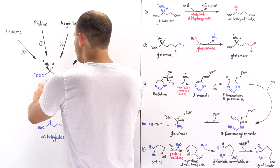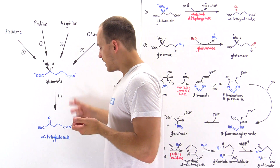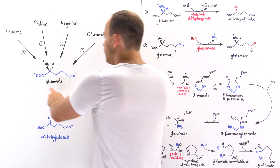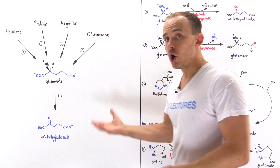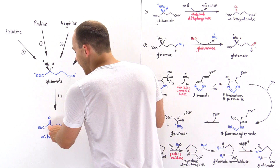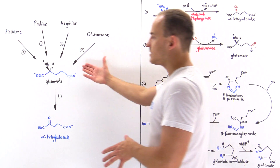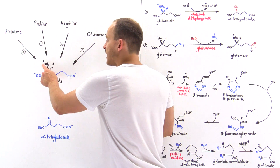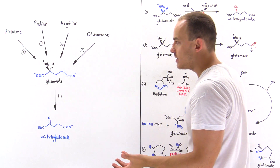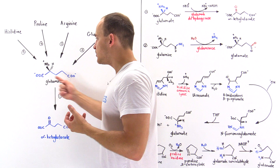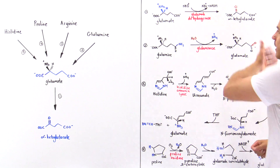Let's take a look at how glutamate can be transformed into alpha-ketoglutarate. What's the difference between glutamate and alpha-ketoglutarate? On glutamate we have this alpha amino group, but on alpha-ketoglutarate we don't. Instead, the carbon is oxidized and we have a carbon-oxygen double bond. So ultimately in this step, we basically want to remove this alpha amino group along with the H ion — we want to remove an ammonium. We want to undergo a deamination step in which we remove this ammonium and oxidize this carbon.